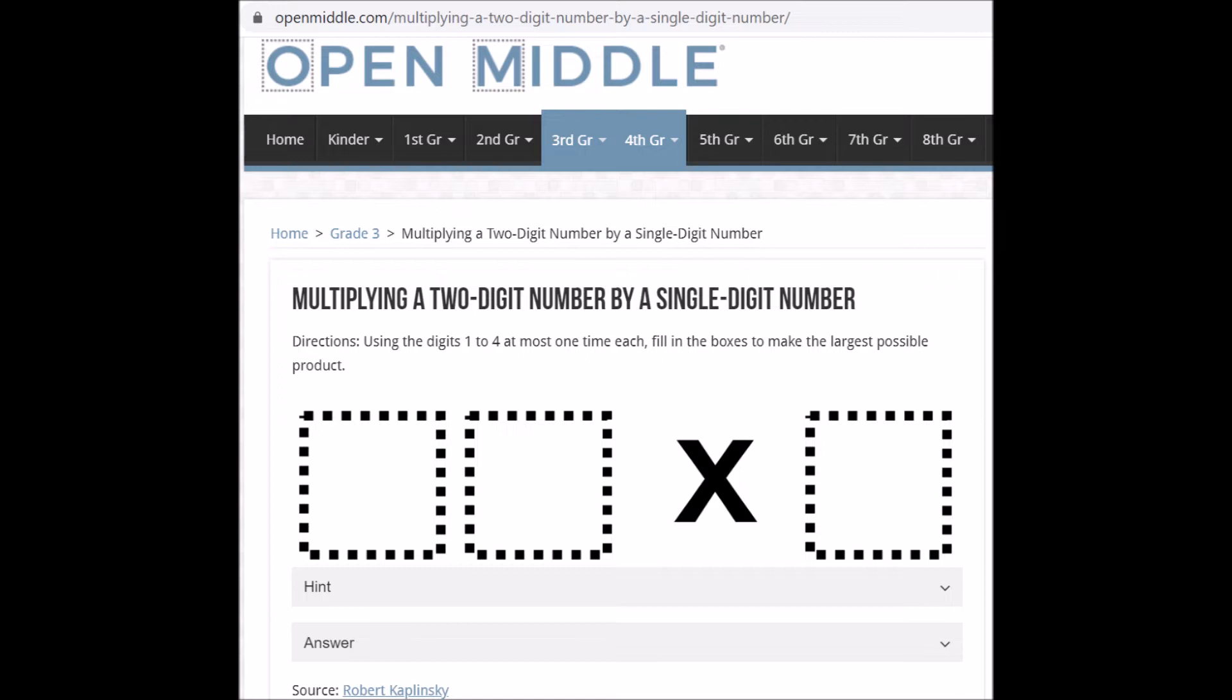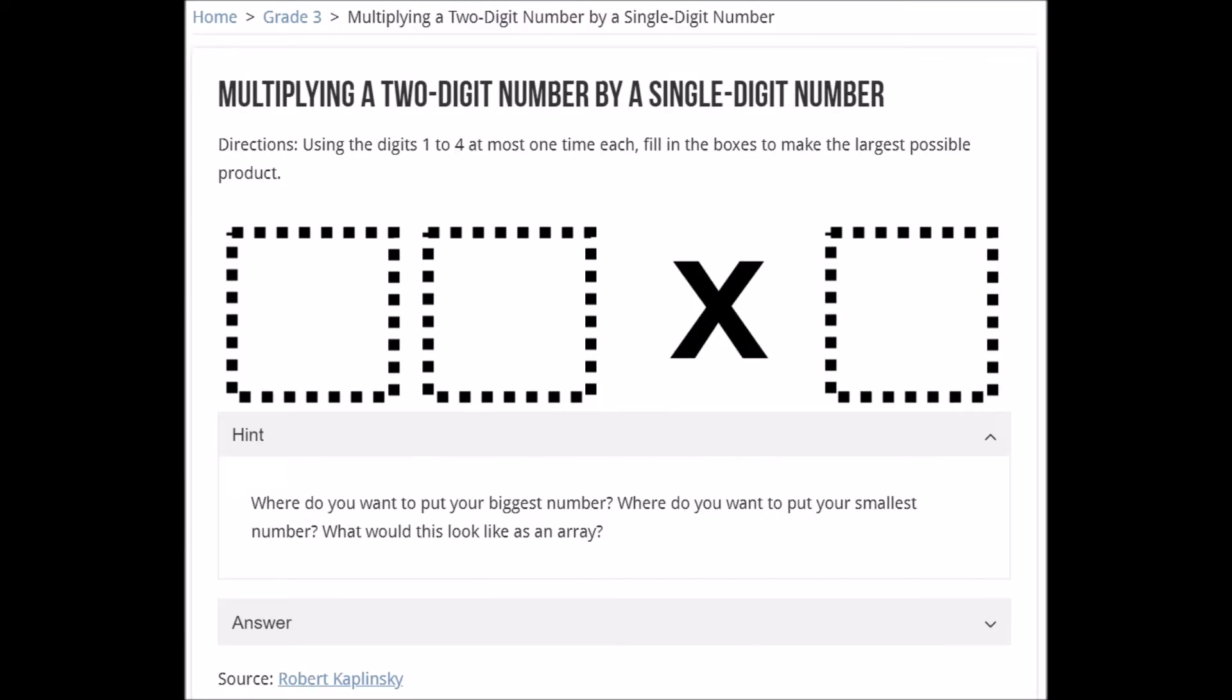It says directions: using the digits one to four at most one time each, fill in the boxes to make the largest possible product. So I see a two digit number times a one digit number. If you would like to hear the hint, don't press pause yet. I'll read the hint in a minute. If you would like to try to figure out now without the hint, go ahead and press pause and then press play when you're ready to hear the answer. Here's the hint for those of you who are waiting. The hint says, where do you want to put your biggest number? Where do you want to put your smallest number? What would this look like as an array?